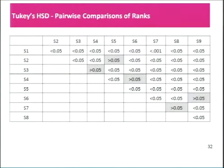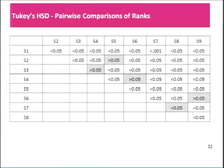There were five pairs that came up to be statistically similar in their image quality scores, and the only common pair between minutia count and image quality that were statistically similar was S3 and S4. You can see that S3 and S4 were both of optical touch type as well.